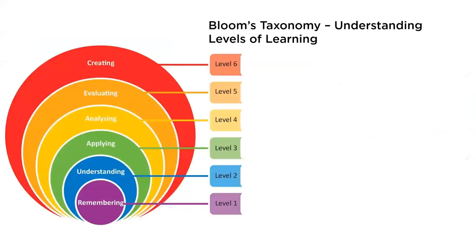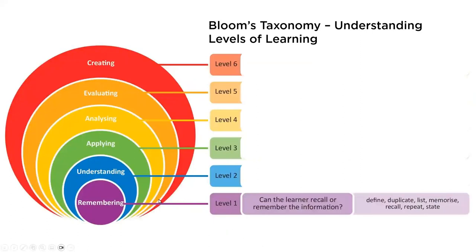We have to consider the different levels of learning. It's always good to look at Bloom's Taxonomy because there are different levels. Our first and lowest level is remembering — that's where learning often stops. That's when you're simply memorizing: defining, duplicating, memorizing, recall, repeat, restate. Can the learner recall information? Examples would be things learned through flashcards, like medical terminology. It's important to be able to memorize content, but we wouldn't want learning to stop just there.